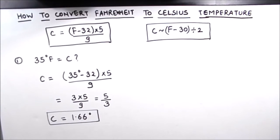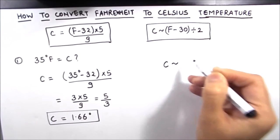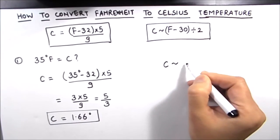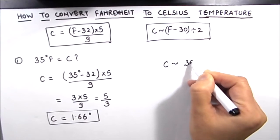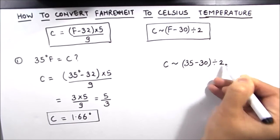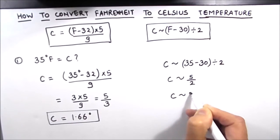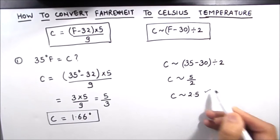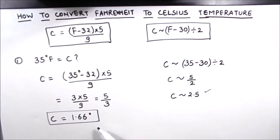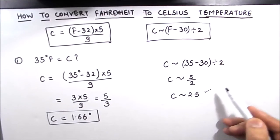There is also a quick version of the formula we can use for quick approximation. So temperature in Celsius is approximately equal to 35 minus 30, divided by 2. Our approximate value is 5 divided by 2, which equals 2.5. This is the approximate value and 1.66 is the exact value. You should use the exact formula for numerical work, and the approximate formula if you just want a quick reference value.